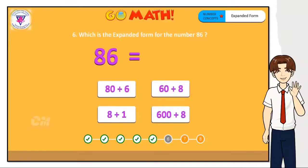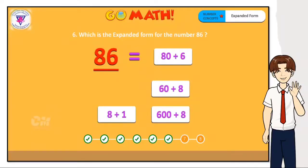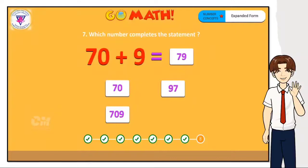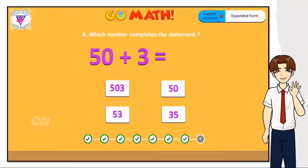Which is the expanded form for the number 86? The digit 8 is in the tens place, so the value of 8 is 80. The digit 6 is in the ones place, so the value of 6 is 6. Together, the expanded form for 86 is 80 plus 6. You are right — the correct answer is 80 plus 6. Here is another statement: 70 plus 9 equals 79. You are right. The correct answer is 79. And 50 plus 3 equals 53. The correct answer is 53.